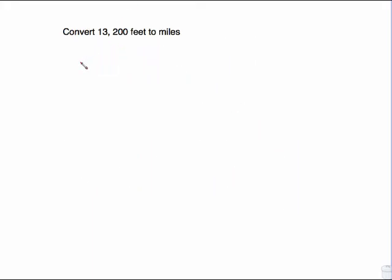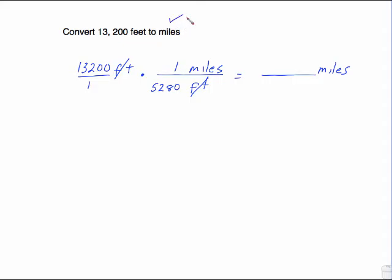Convert 13,200 feet to miles. 13,200 over 1 feet. I need feet to disappear so it goes on the bottom. I want miles to remain so it stays on the top. One mile is 5,280 feet. When you multiply, the word feet disappears. You will be left with miles, which is the unit you are asked to have. Then we just have to do this arithmetic. Divide this out, and we get 2.5 miles. So 13,200 feet is equal to 2.5 miles.